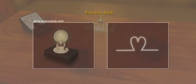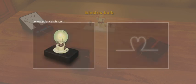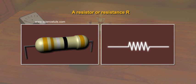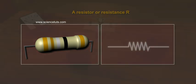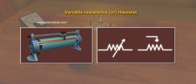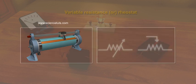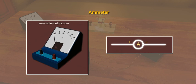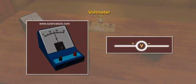Seven, electric bulb. Eight, a resistor or resistance R. Nine, variable resistance or rheostat. Ten, ammeter. Eleven, voltmeter.